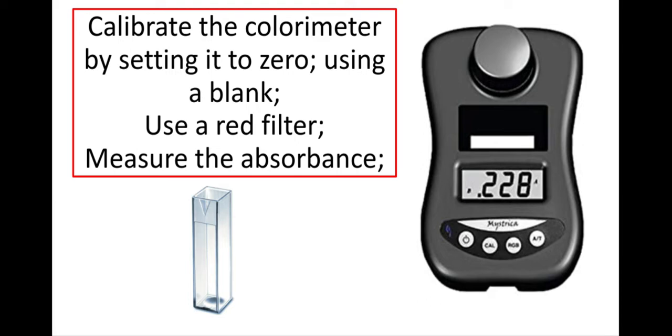It's also very important that I use a red filter. So I'd press this button here which stands for red, green, or blue filter so that I get a little R in this corner here, because I'm going to be looking at a red filter and I'm going to be measuring the absorbance. So the absorbance is the volume of light that is absorbed by my sample.